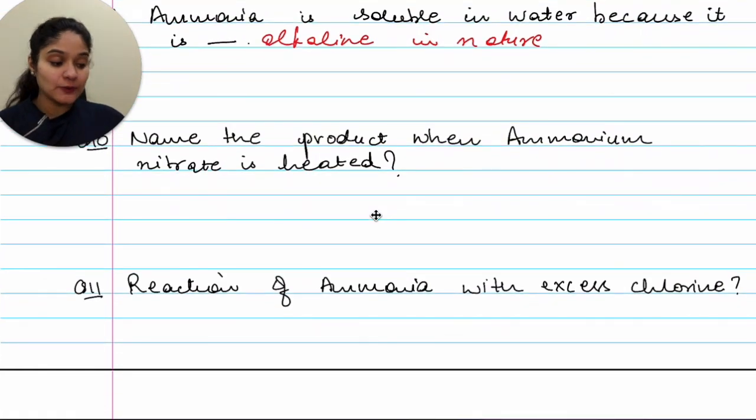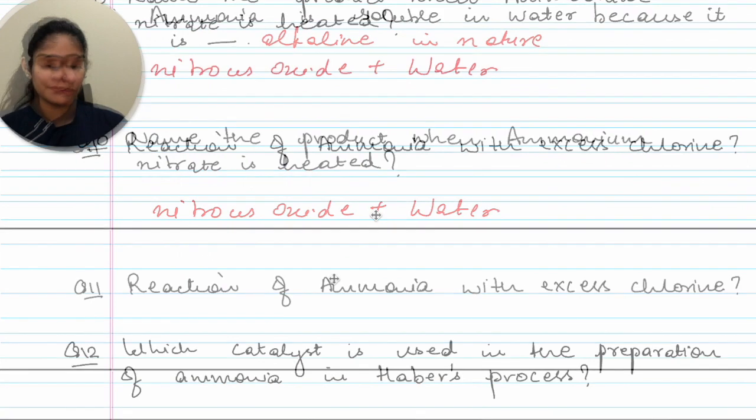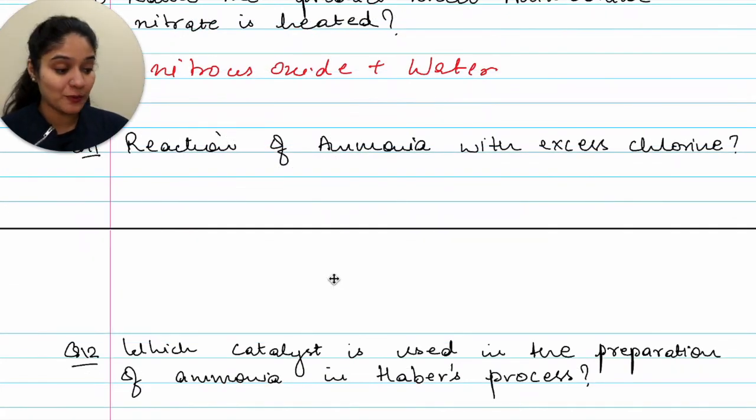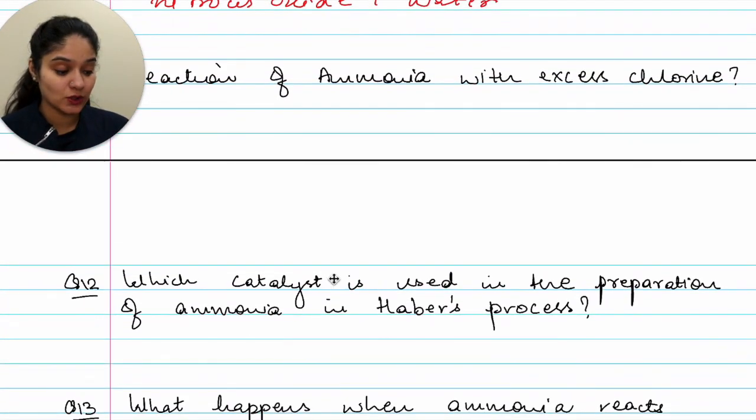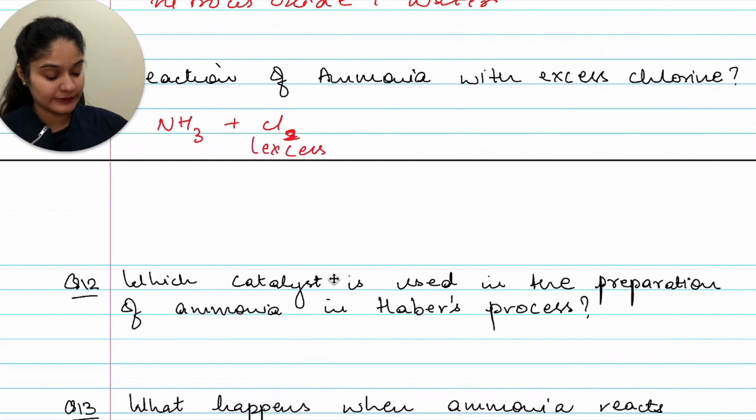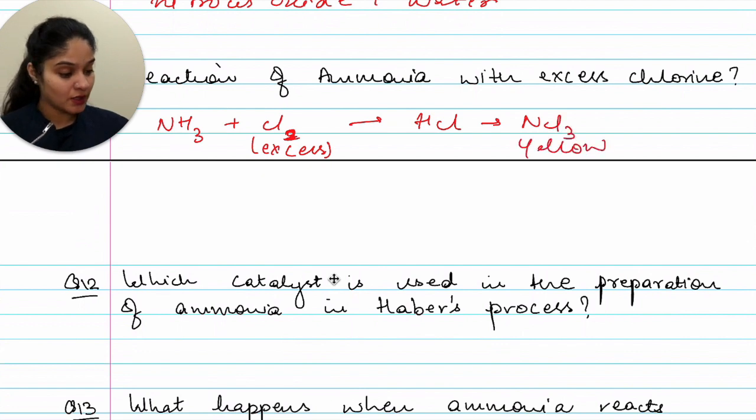Question tenth. Name the product when ammonium nitrate is heated. So you will get nitrous oxide plus water. Moving on to question eleventh, reaction of ammonia with excess chlorine. So you would have ammonia plus chlorine, this is excess, we would get HCl and NCl3 which would be yellow in color.